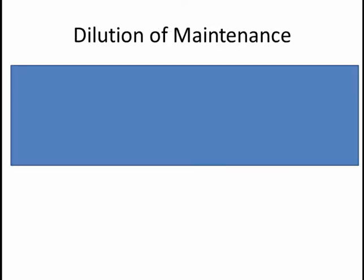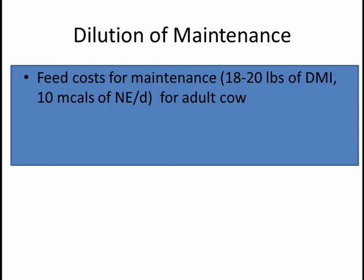Now what do we mean by this dilution of maintenance? Well, first of all, every cow, every adult cow requires feed cost or feed for maintenance. We need to feed at least 18 to 20 pounds of dry matter that will have maybe 10 mcals of energy per cow per day. So in other words, we have to have a bare minimum of feed going into cows just to maintain their daily activities, maintaining body temperature, maintaining posture, and what have you.